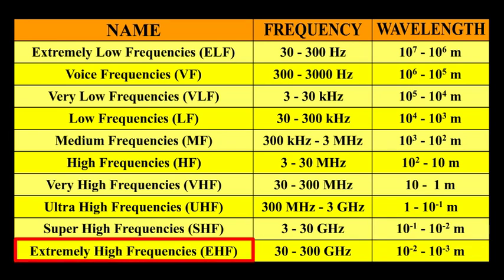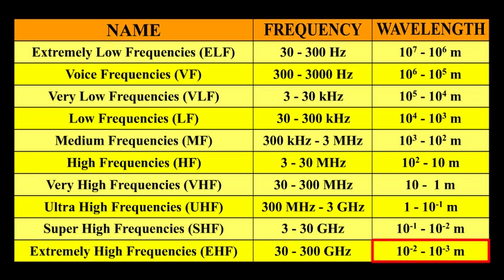Extremely high frequencies, i.e. EHF, the frequency will be 30 to 300 GHz. The wavelength will be 10 raised to minus 2 to 10 raised to minus 3 meters.